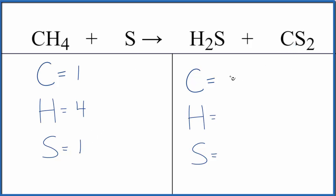Product side, we have the one carbon, then hydrogens, we have two of those. And then for sulfur, be careful, we have one here and two here. So one plus two, three total sulfur atoms.